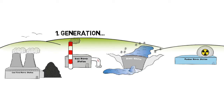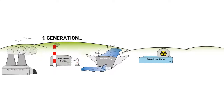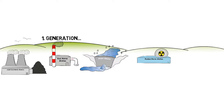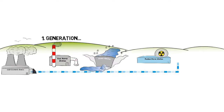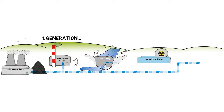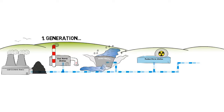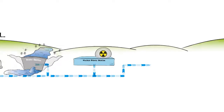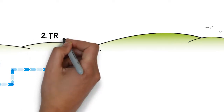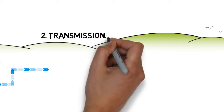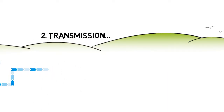Once generated, the electrical power from all the different sources needs to be transmitted from all the various power stations over long distances to towns and cities where it can be used. This part of the journey is called transmission. To transmit electricity over long distances, we use high voltages.